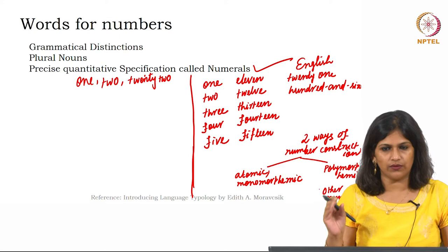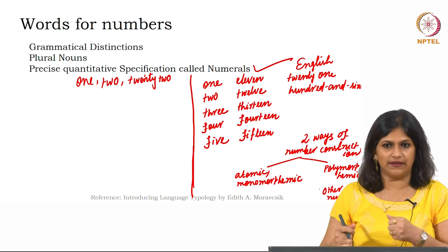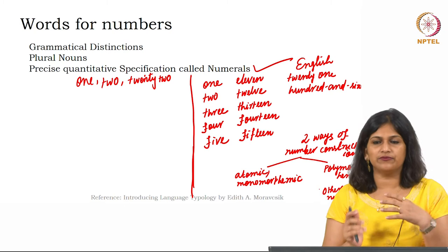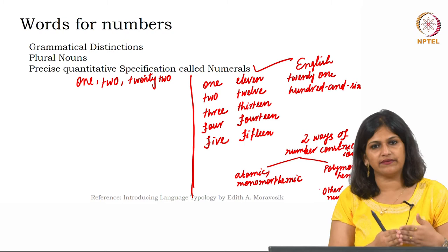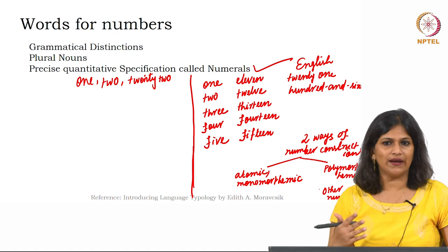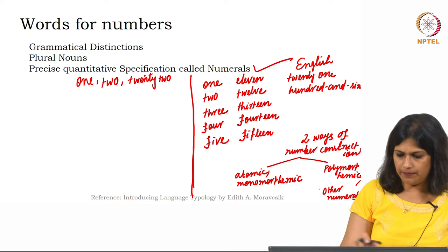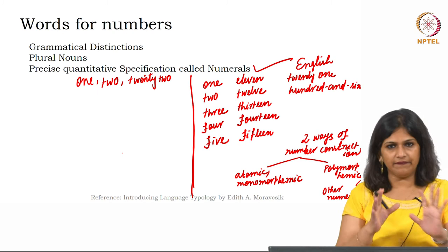When we say lexical typology, we need to find out what different lexical types exist. As far as the number system is concerned, these are the three types. And if there are polymorphemic numerals, what are the components? That is another thing to understand.